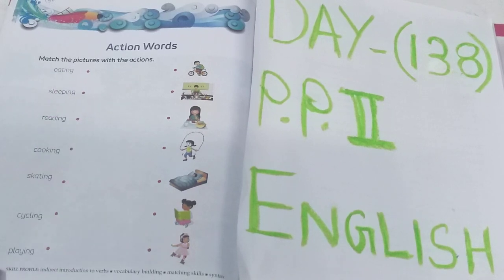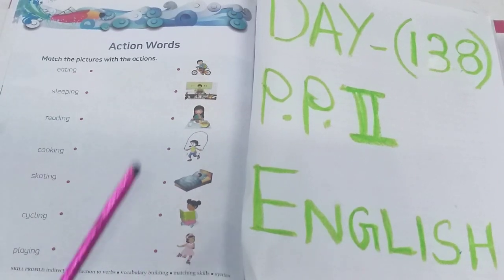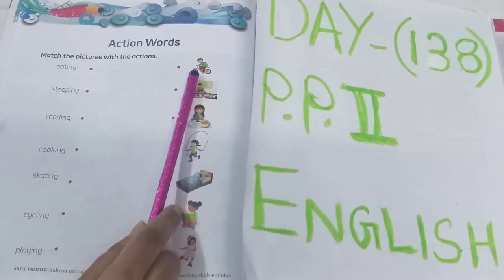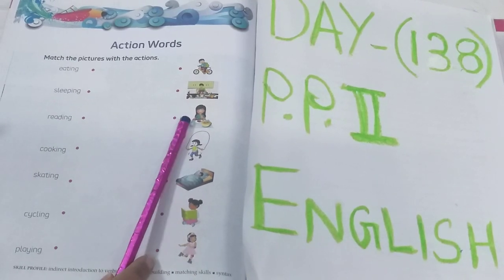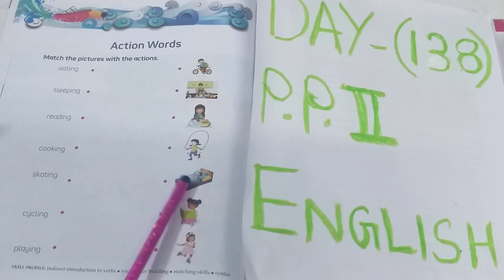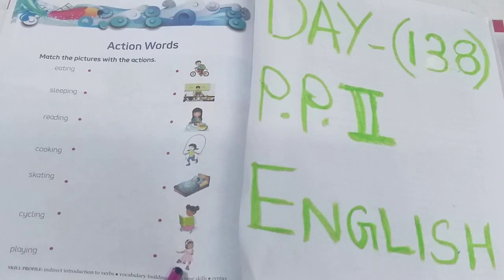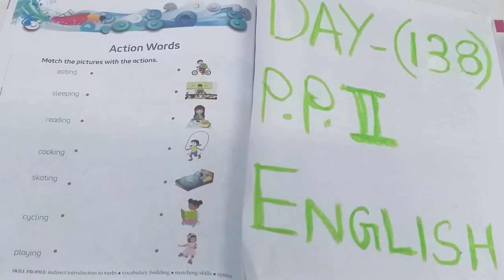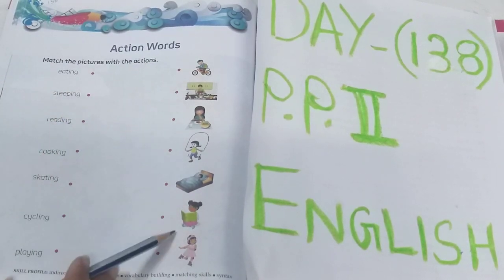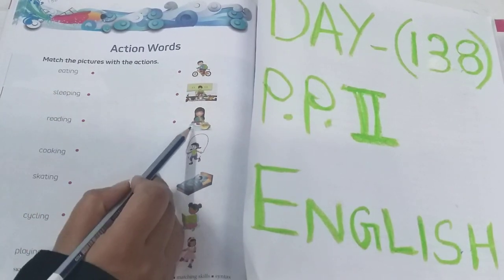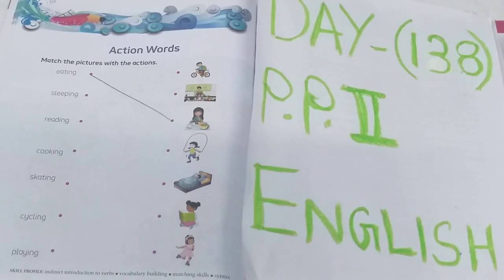These are the words and the spellings — you have to learn this. Okay children, here you can see the actions: cycling, cooking, eating, skipping, sleeping, reading, skating. Now we have to match. See the first word: eating. Where is the picture of eating? Here you can see the girl is eating, so we have to match — eating.